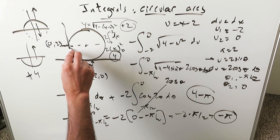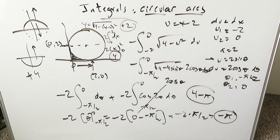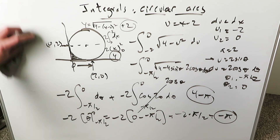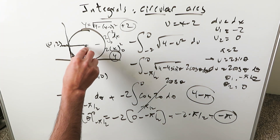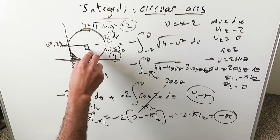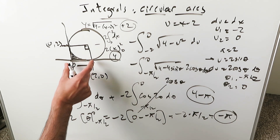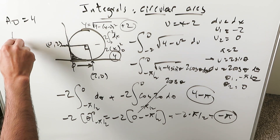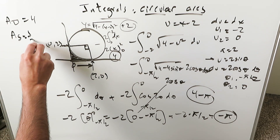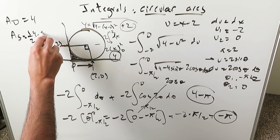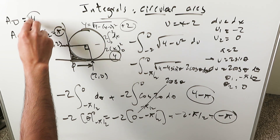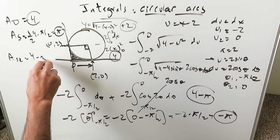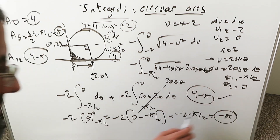This answer can be verified geometrically. You're looking at a square with side 2 (the radius), giving area 4. The sector formed has area half times r squared times theta, which is half times 4 times pi over 2, equal to pi. The difference — area of the square minus area of the sector — gives 4 minus pi, confirming our integral answer is correct.